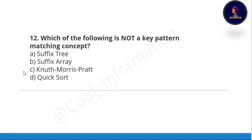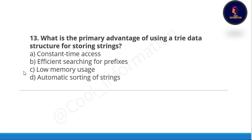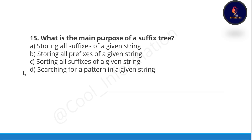Next question: which of the following is not a key pattern matching concept? Options are suffix tree, suffix array, Knuth-Morris-Pratt, and quick sort. Quick sort is not a key pattern matching concept. Next question: what is the primary advantage of using a trie data structure for sorting strings? Option B is correct — efficient searching for prefix.